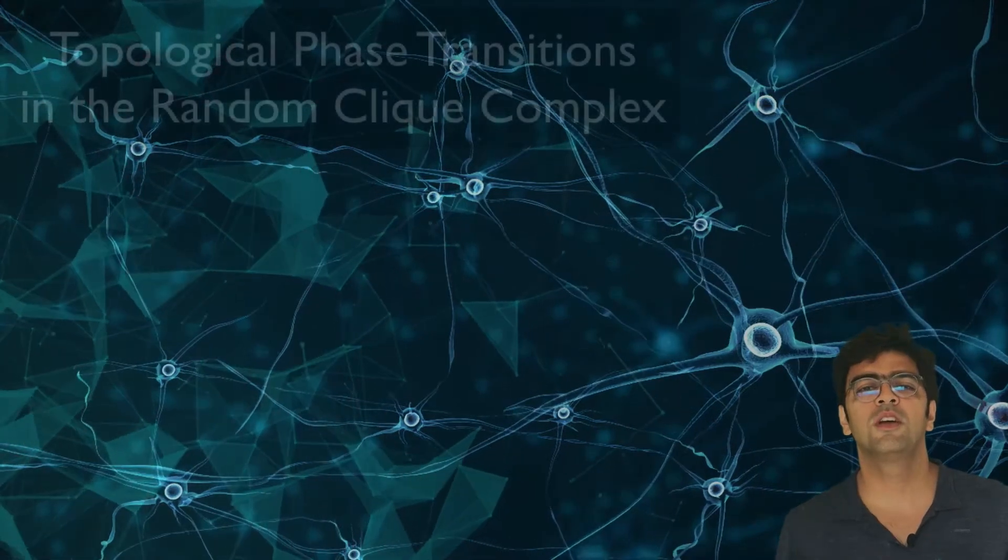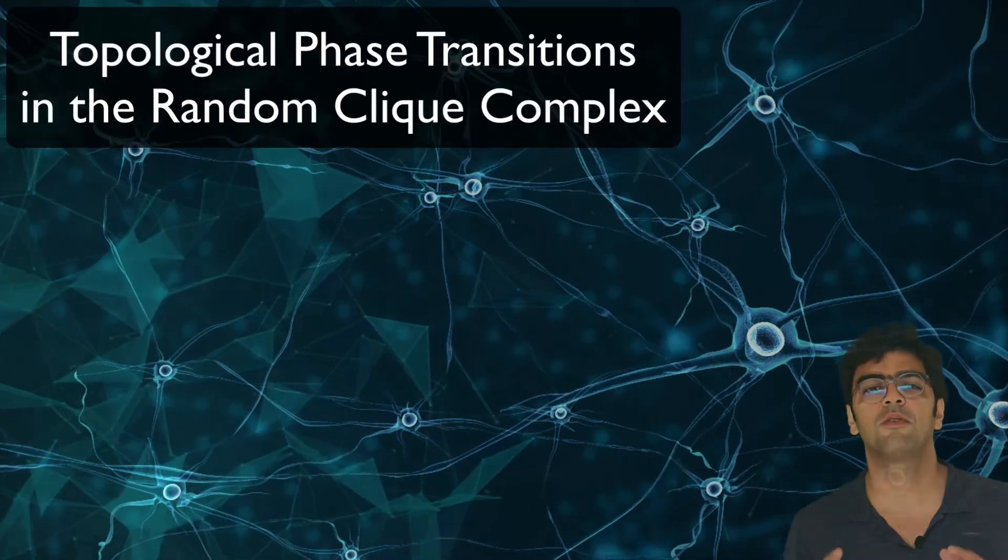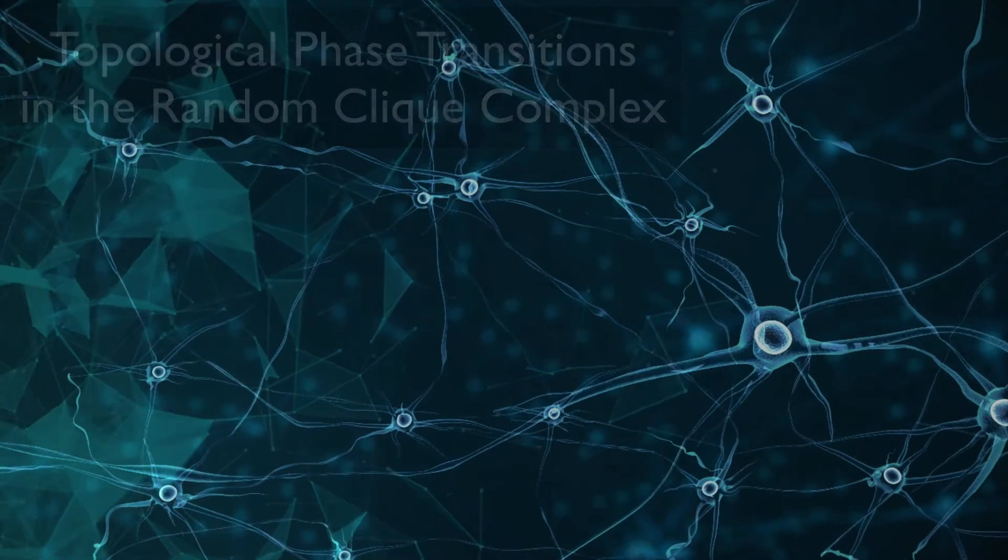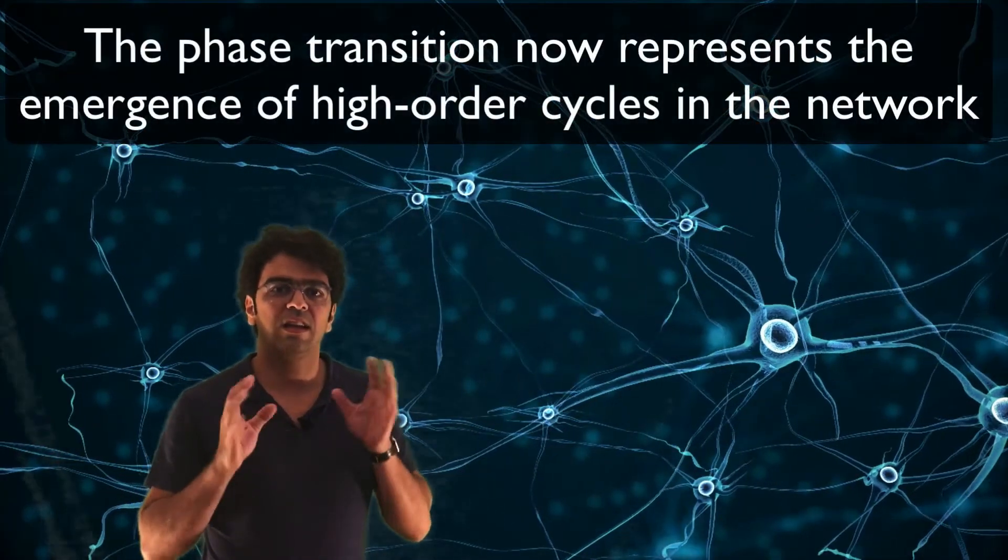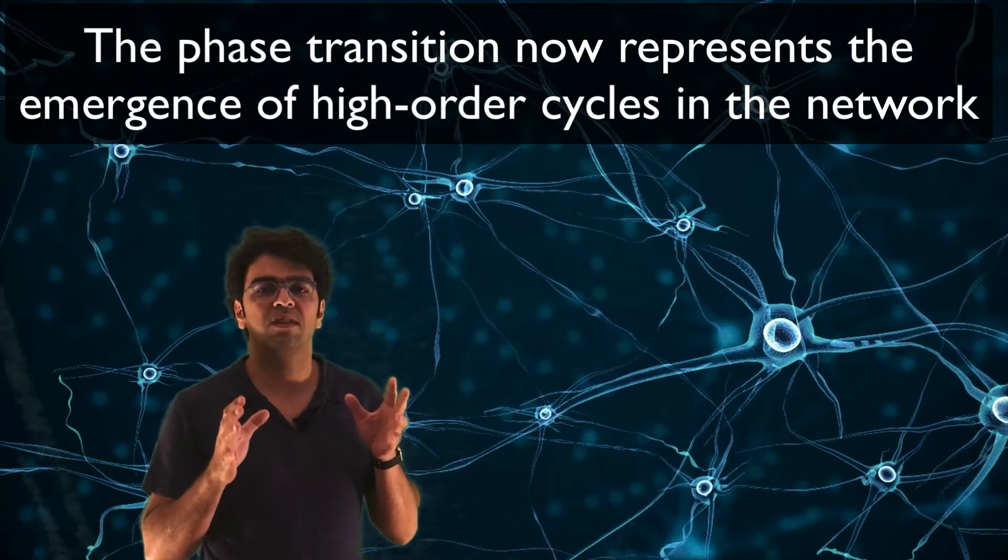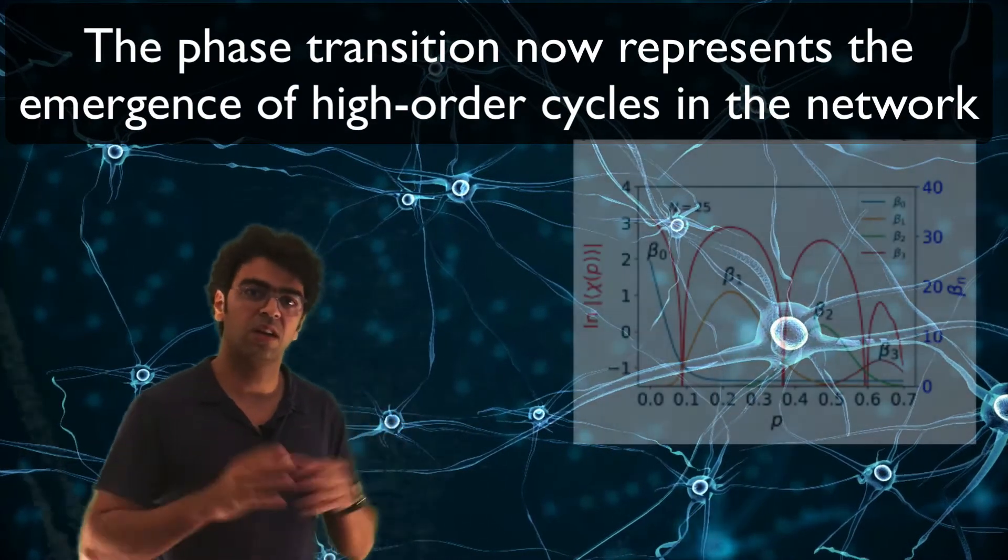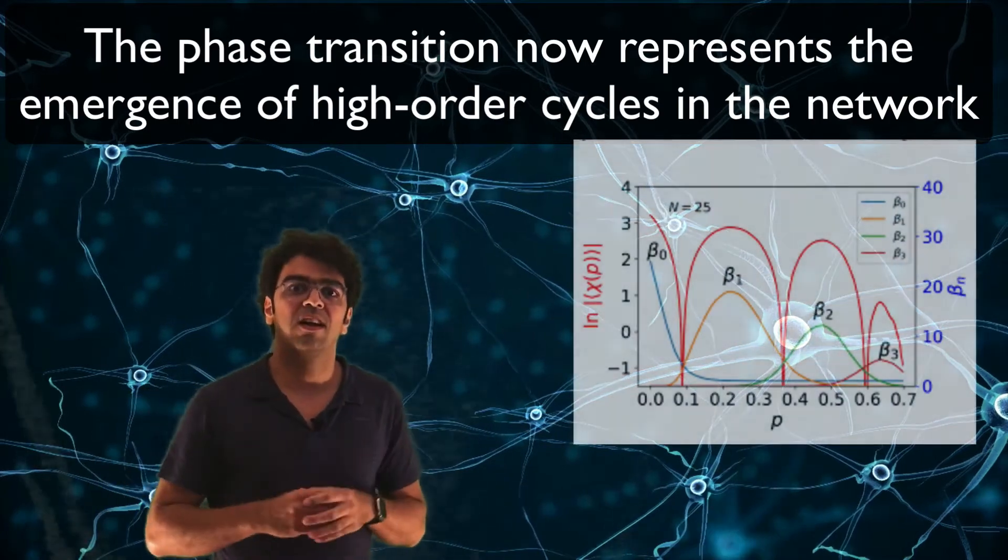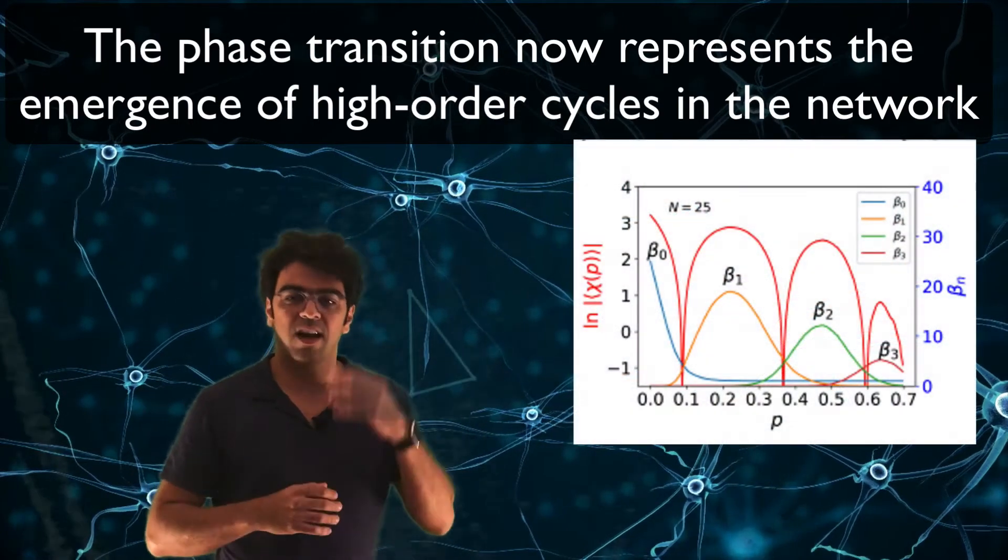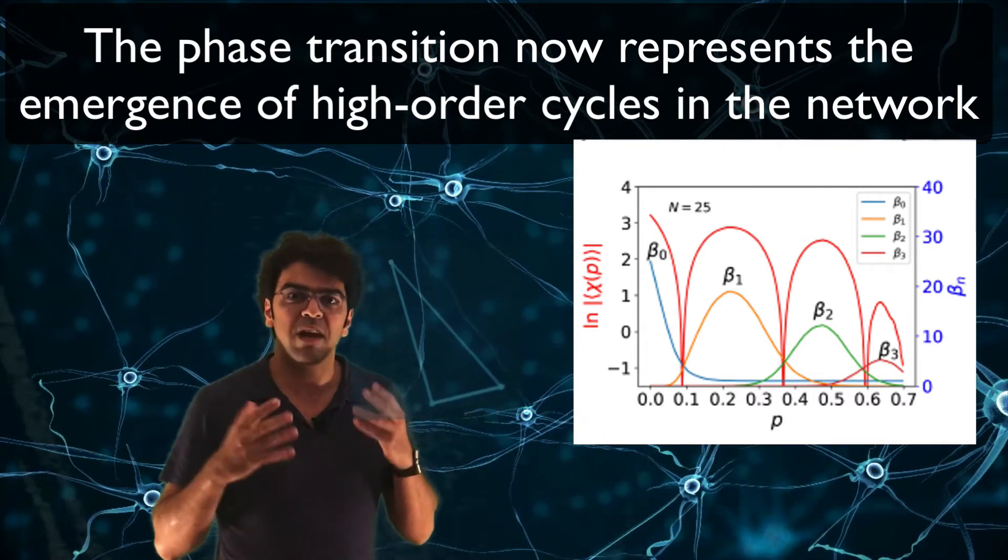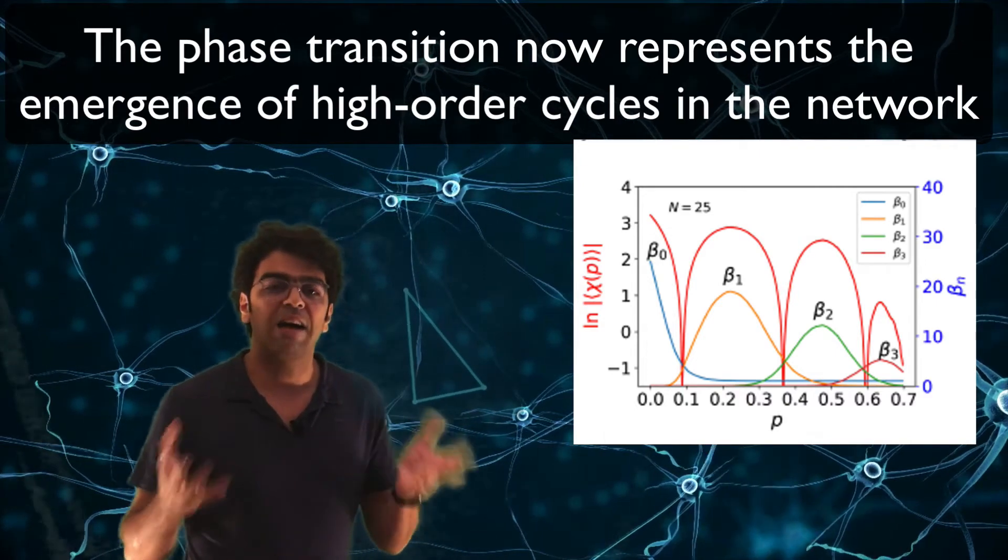We now move to the phase transitions in the simplicial complex of a random graph. In the same way that when I attach a new link in a network after the giant component transition, it's very likely that there will be a new loop in the network. If I attach now a higher-order structure, let's say a triangle, after a phase transition, it will be very likely that there will be now a cavity in a network.